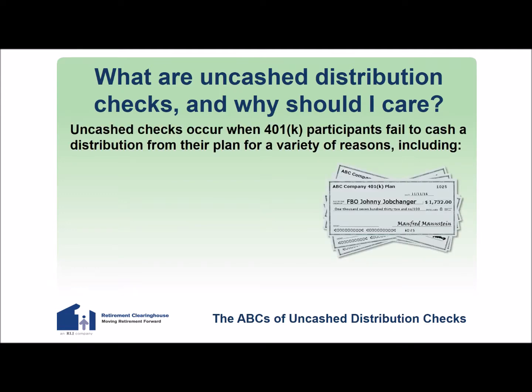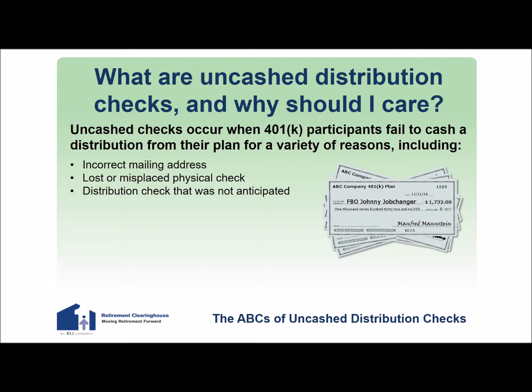Uncashed distribution checks occur when retirement plan participants fail to cash or deposit a distribution from their qualified retirement savings accounts for a variety of reasons, including an incorrect mailing address, a lost or misplaced physical check, a distribution check that was not anticipated, or is the result of inaction on the part of the participant.